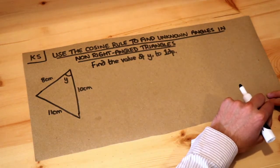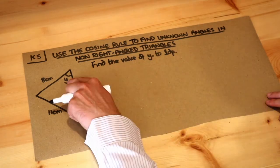So we've got a non-right-angle triangle here and we want to find the value of y, this angle y.